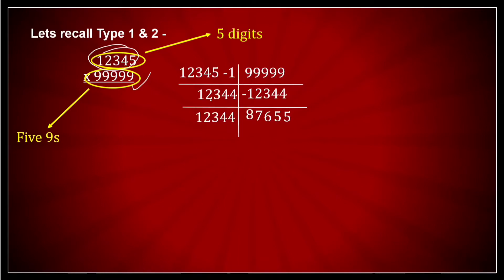So my answer for 12,345 multiplied by 99,999 came out to be 1, 2, 3, 4, 4, 8, 7, 6, 5, 5. A big lengthy calculation which was done in seconds.